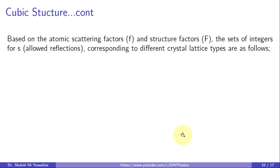Such a set of integers that are permissible for s, i.e., the allowed reflections, are determined by taking into account the atomic scattering factors and structure factors that correspond to various crystal lattice types. For simple cubic, reflections with any hkl are allowed. For example, 1, 2, 3, 4, 5, 6, 7, and so on.